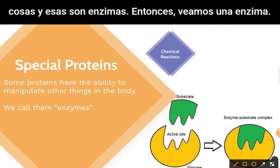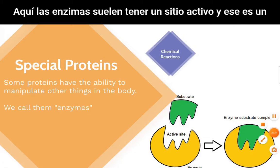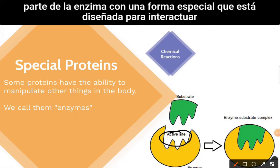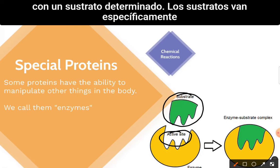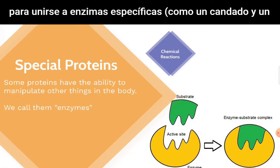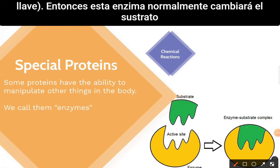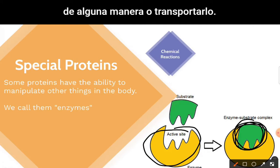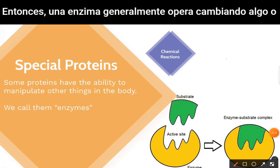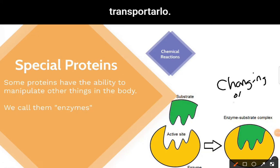Enzymes typically have an active site — a specially shaped part of the enzyme designed to interact with a certain substrate. Substrates bind to specific enzymes like a lock and a key. The enzyme will then typically change the substrate somehow or transport it.